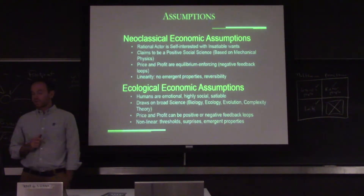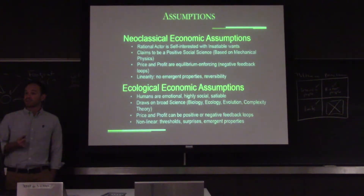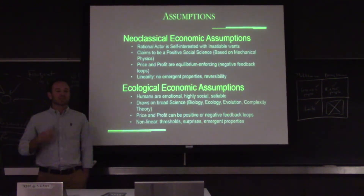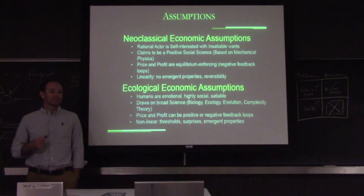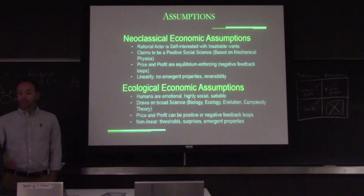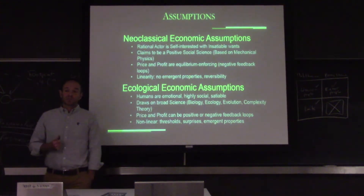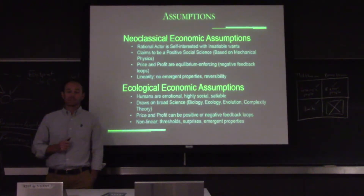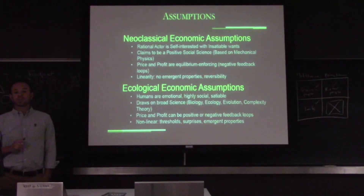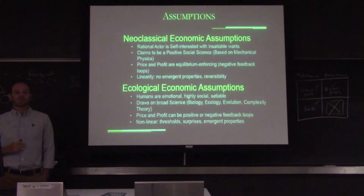Price and profit, as we look at it, can be positive feedback loops as well as negative feedback loops. When we look at the housing market in 2006, we saw price acting as a positive feedback loop instead of the negative feedback loop it's supposed to in theory. Contrasting the neoclassical assumptions, we see thresholds, surprises, and emergent properties, especially in natural systems. They say that if the Amazon is deforested to 30%, it will collapse. Whereas the neoclassical linear approach would say if you got to 28% you could back up and get back to 32% forest cover — but we know it will completely collapse below 30%.